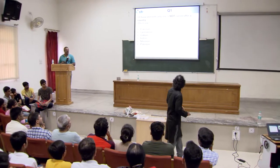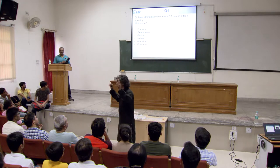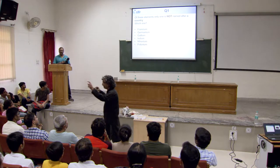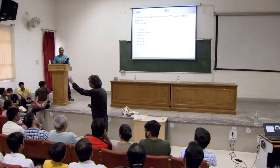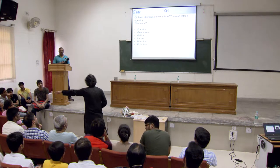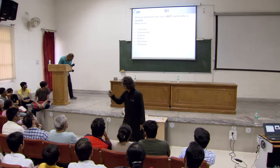Don't shout out your answer, raise your hand. Here's a list of six elements: Francium, Germanium, Gallium, Indium, Nihonium, Polonium. One of these is not named after a country — which one? The answer is Indium. Very good. Why? It's named after the indigo color in the spectrum.